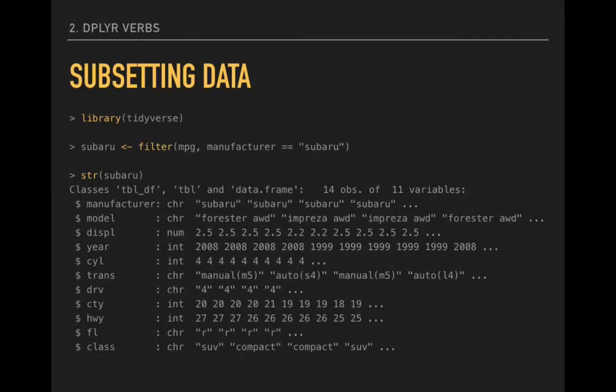And here's an example of what this simple search looks like. We run the structure function on our subset of data, and we see now that there are only 14 observations, all Subaru's.